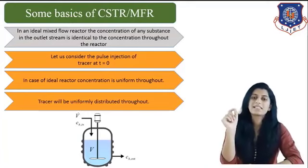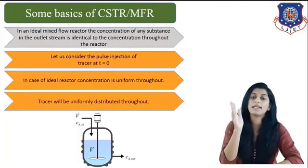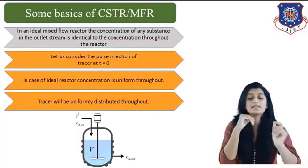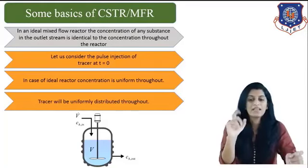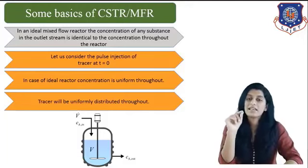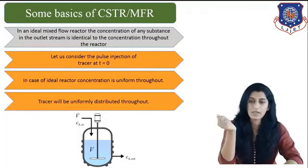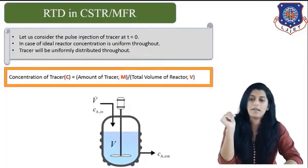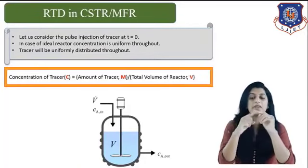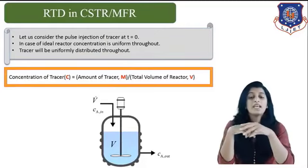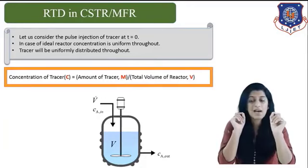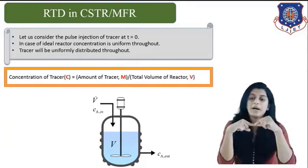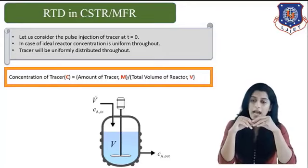This is the picture of an ideal CSTR. There is C_Ain — inlet concentration of component A — entering from the top of the reactor, and C_Aout — outlet concentration of component A — at the outlet stream. V is the volume of the reactor and V₀ is the volumetric flow rate. For the RTD study of MFR, we have C_Ain, C_Aout, and volume V. The first assumption is we use pulse injection: at time t = 0, a known amount of tracer is inserted into the reactor.